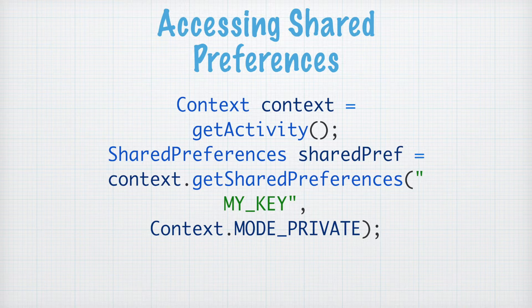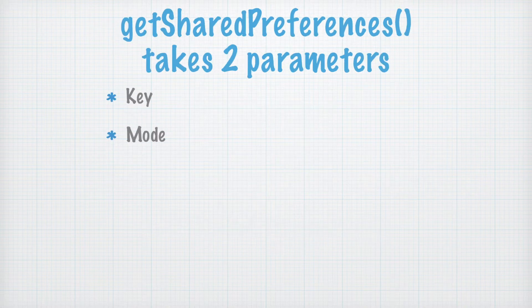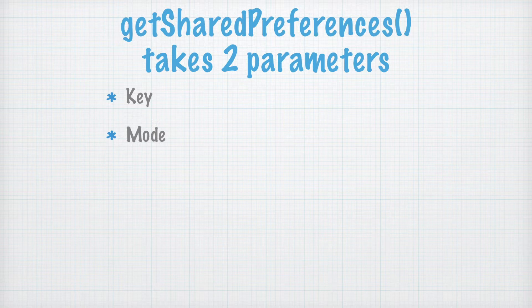Shared preferences can be accessed by getting a handle to context. In our fragments, we can get a handle of context by using getActivity(). There is a method called getSharedPreferences() in context which accepts two parameters: one is a key and the second is a mode. The key is just a string value — you are free to use whichever you want. Generally, we use a string stored in a strings.xml file as a key.